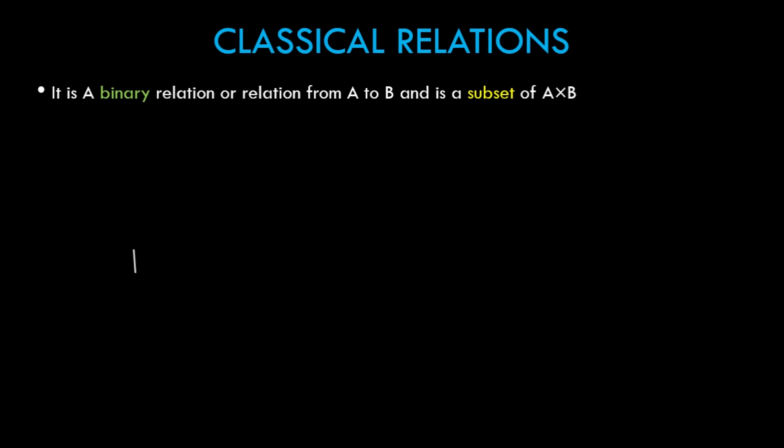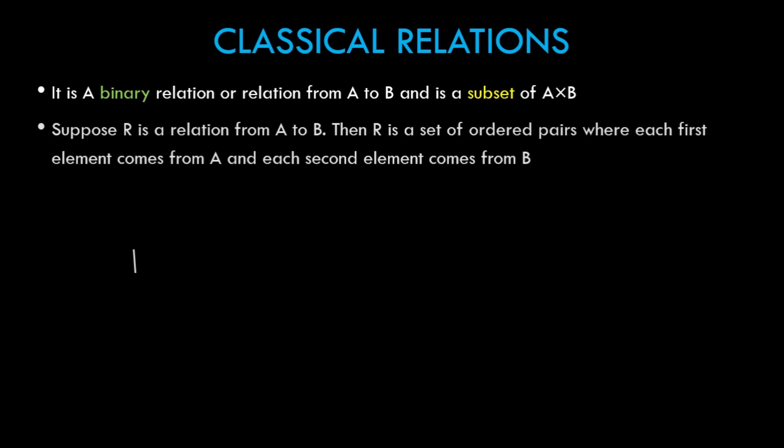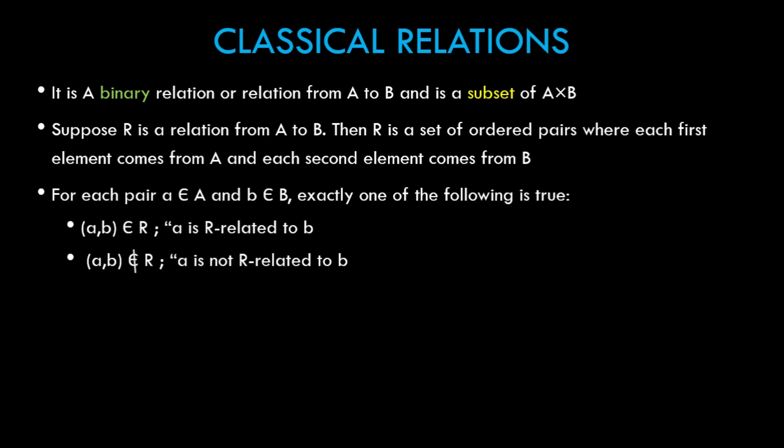Suppose R is a relation from A to B. Then R is a set of ordered pairs where each first element comes from A and each second element comes from B. For each pair where a ∈ A and b ∈ B, exactly one of the two possibilities is true: either (a,b) ∈ R, a is R-related to b, or (a,b) ∉ R, a is not R-related to b.